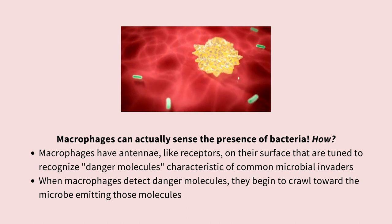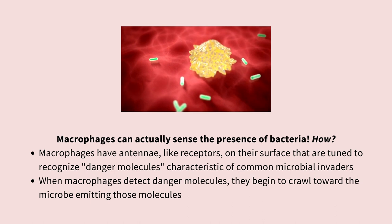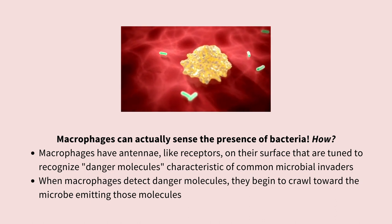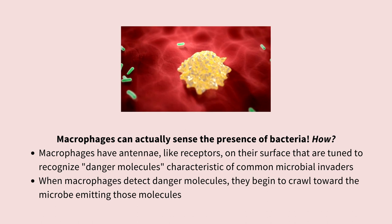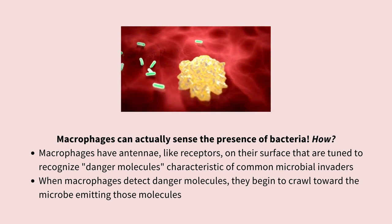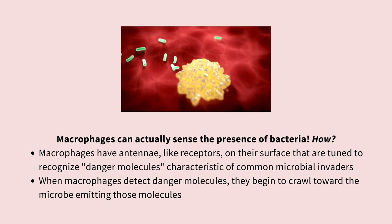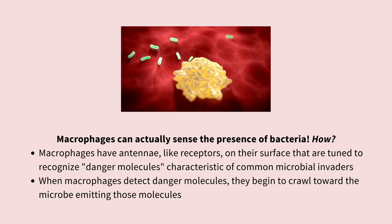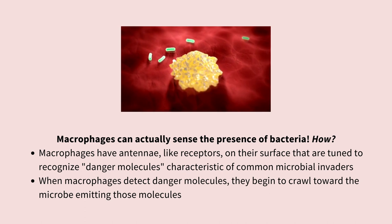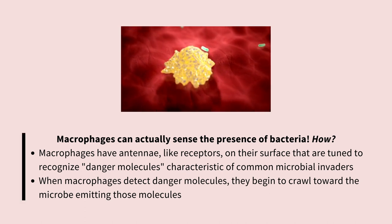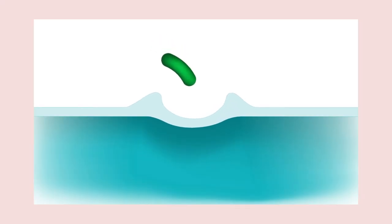Macrophages have antennae — receptors on their surface — that are tuned to recognize specific danger molecules characteristic of common microbial invaders. For example, the membranes that surround bacteria are made up of certain fats and carbohydrates that we wouldn't typically find in the human body. Those foreign molecules represent a "find me, eat me" signal for macrophages. When macrophages detect these danger molecules, they begin to crawl towards the microbe emitting them.